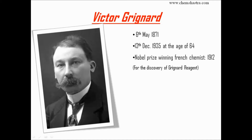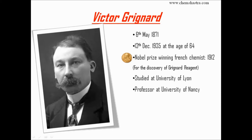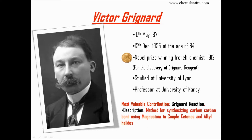Victor Grignard was a French chemist who won the Nobel Prize in 1912 for the discovery of the Grignard reagent. He studied at the University of Lyon and was a professor at the University of Nancy. His most valuable contribution was the Grignard reaction — a method for synthesizing carbon-carbon bonds using magnesium to couple ketones and alkyl halides.